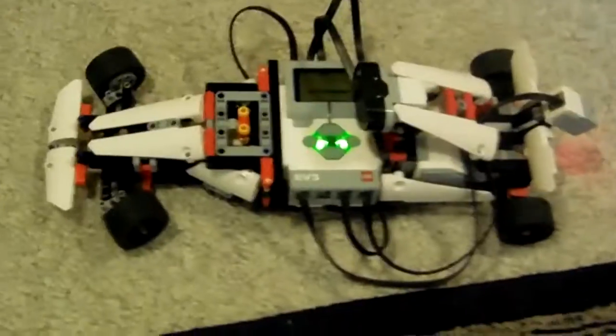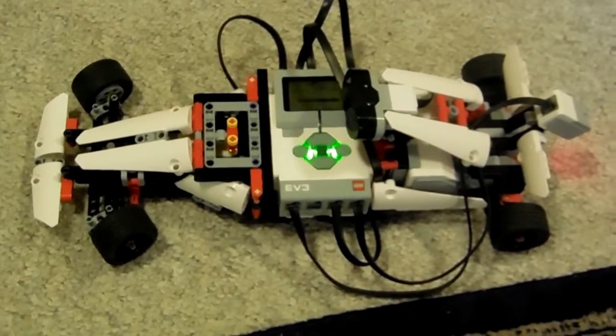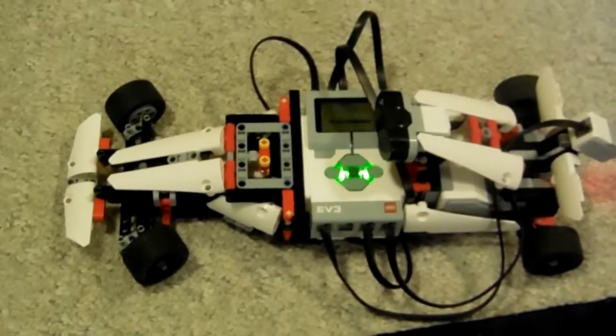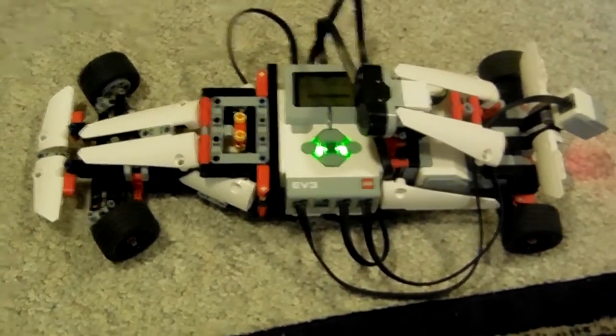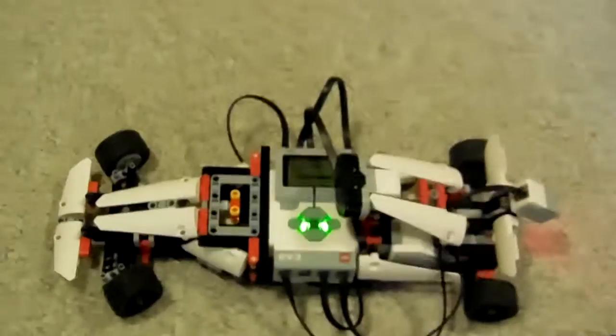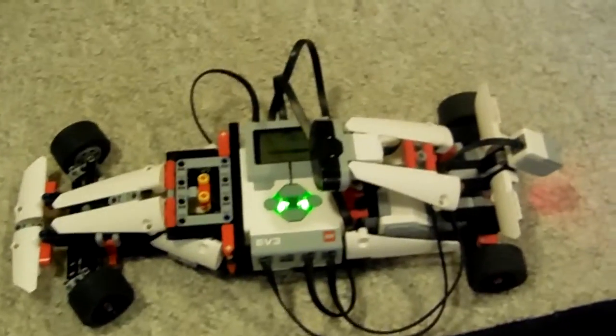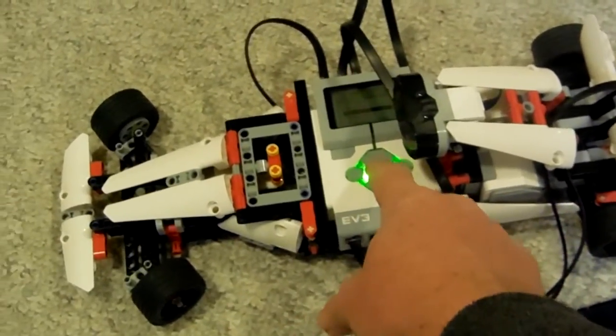So what I'm going to do is start up the program and you will see the front wheels align themselves, and then the robot will start on its way. There is a door that's about 8 feet in front of this and it should detect that within a couple of feet of the door and turn around and go the other way. So I'm going to start the program.